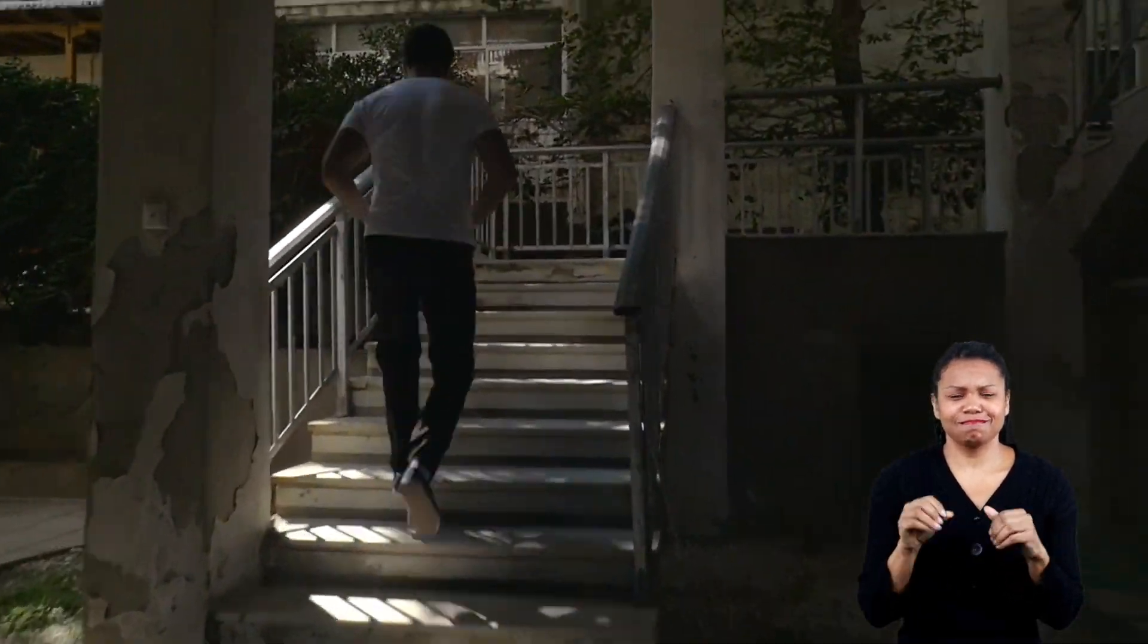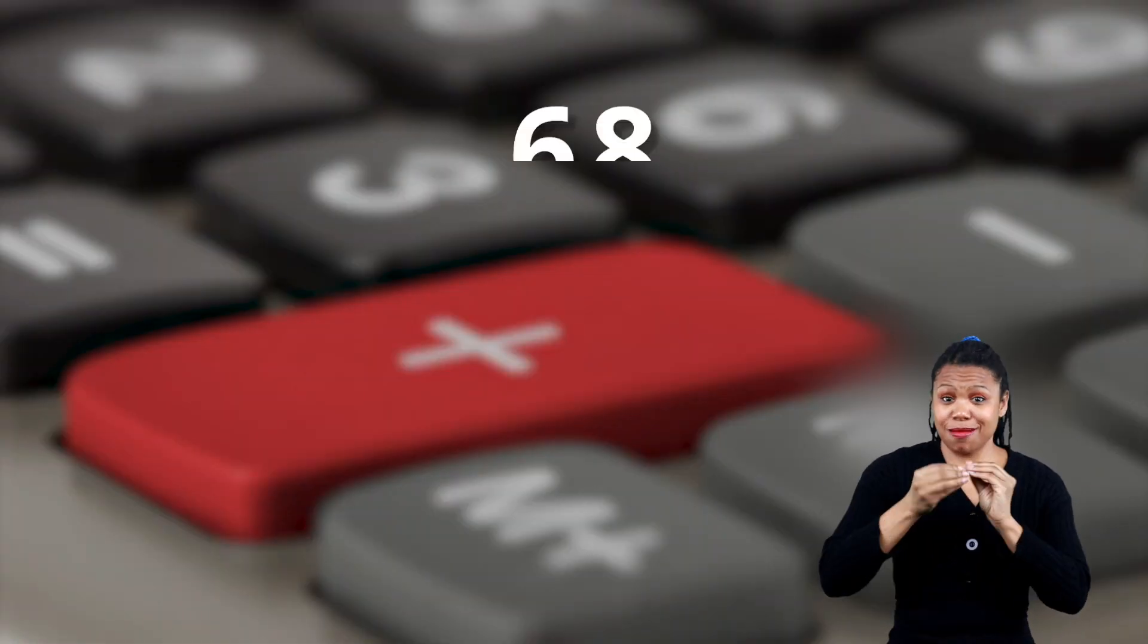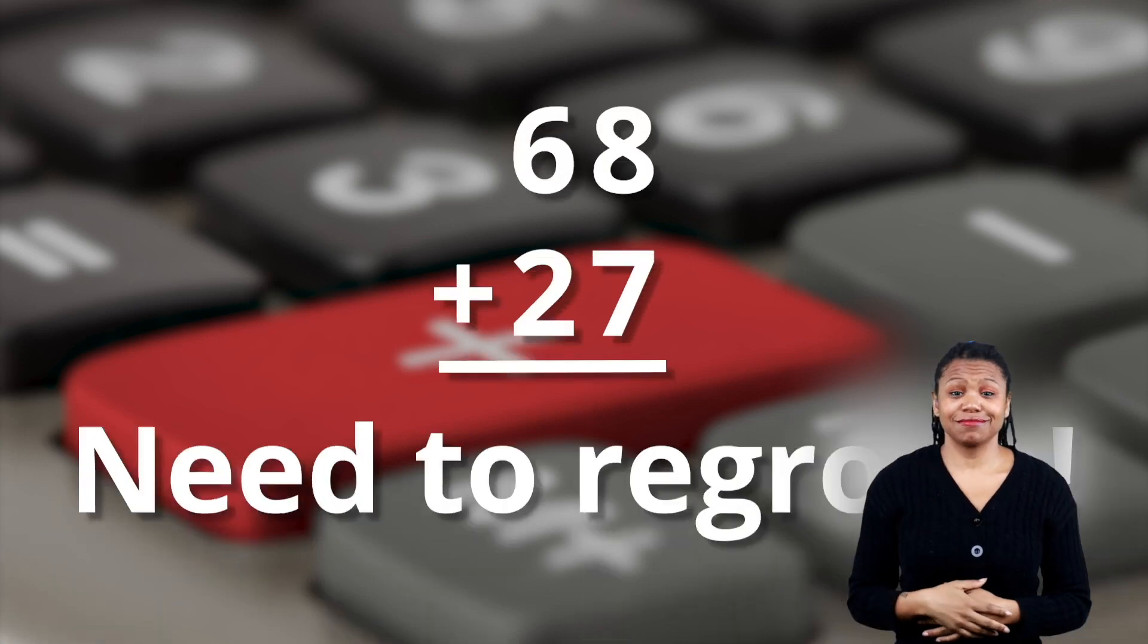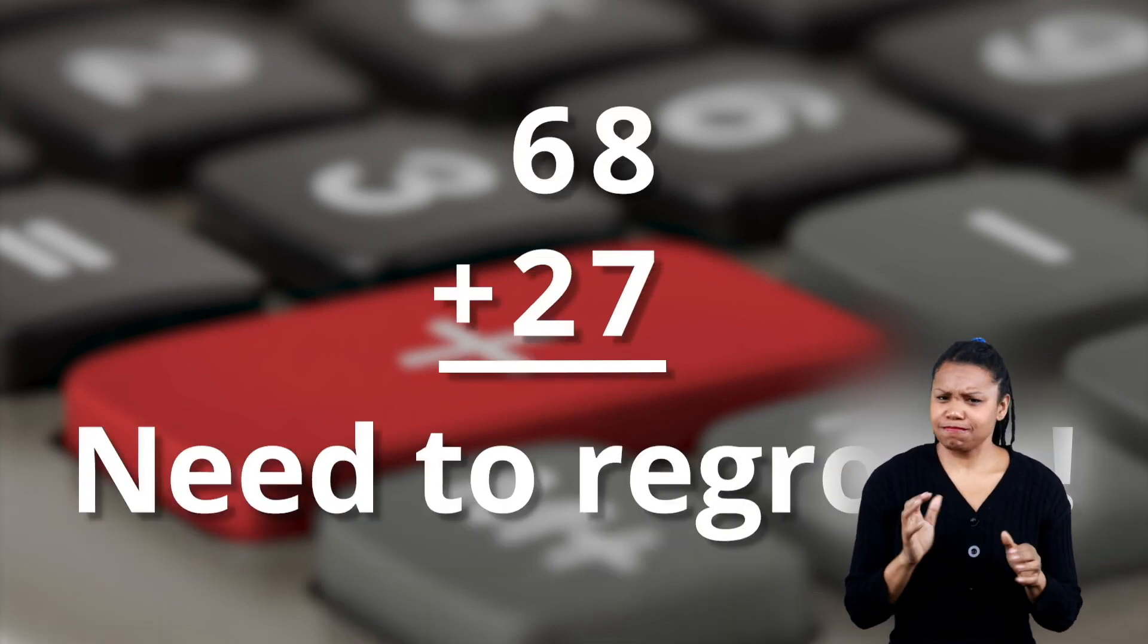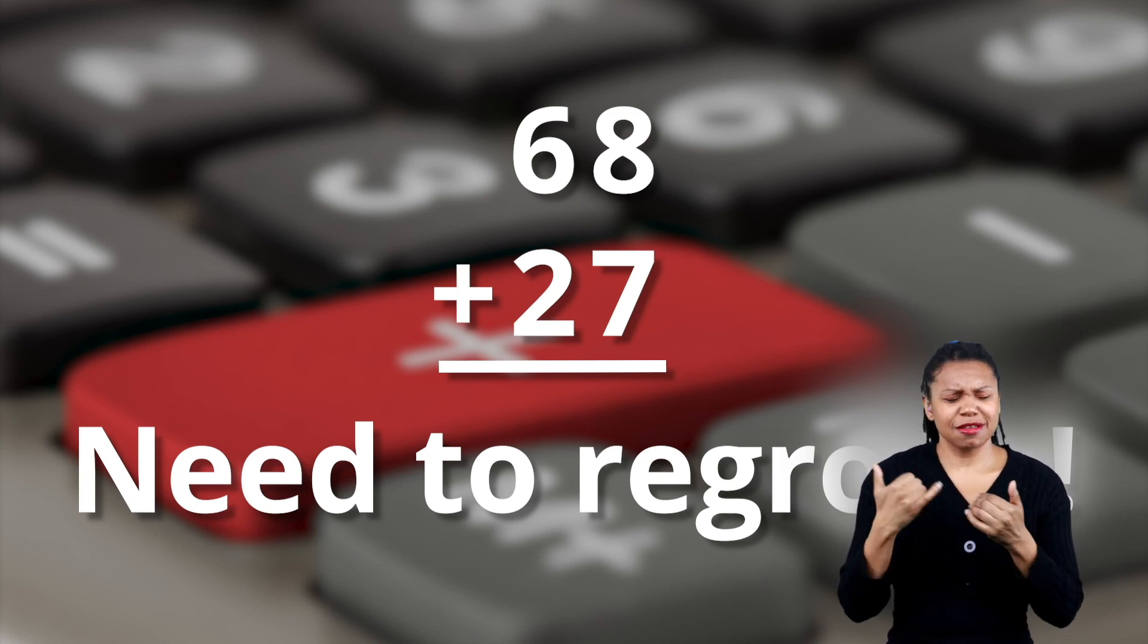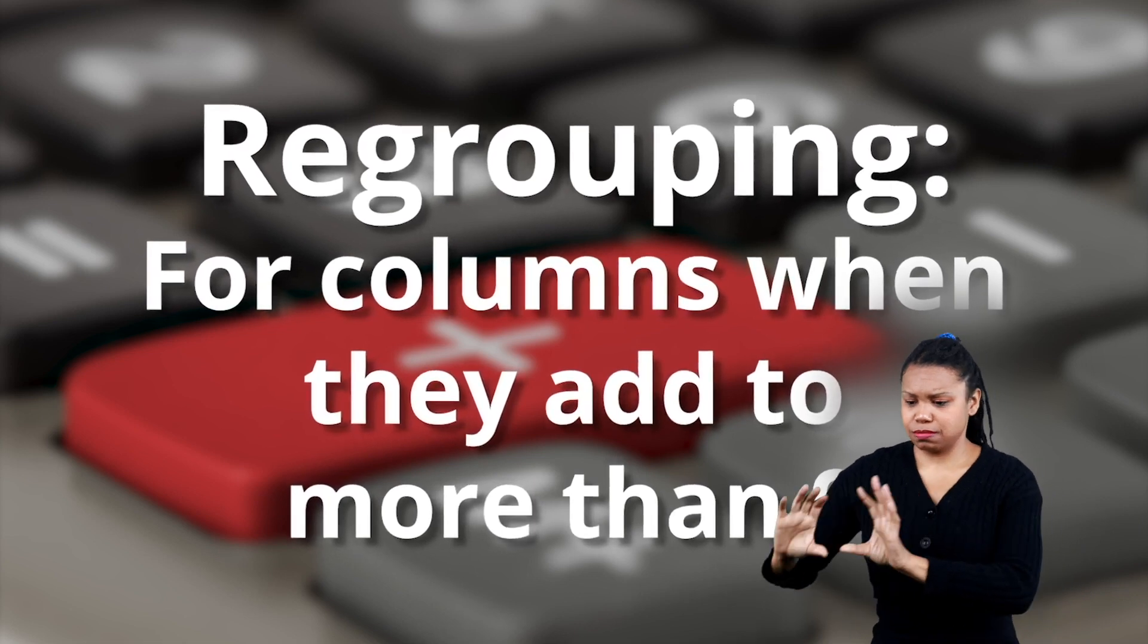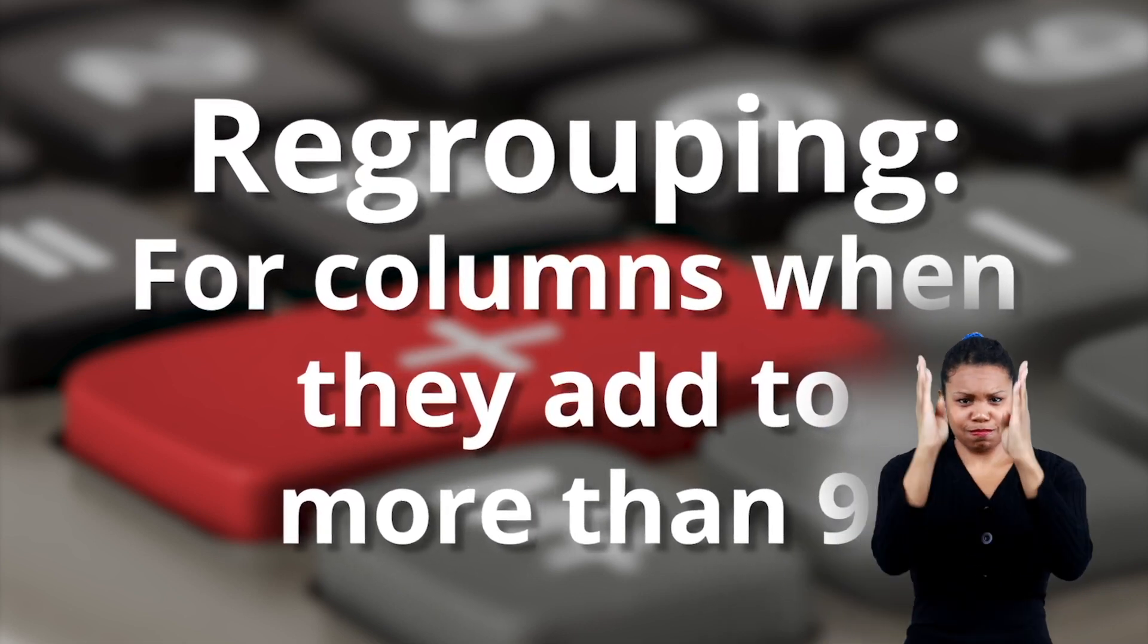But now, let's step things up. Let's say you want to add the number sixty-eight and the number twenty-seven together. That would definitely require some regrouping. Let's dive right in. Remember, regrouping must be done for all place value columns when they are greater than nine.